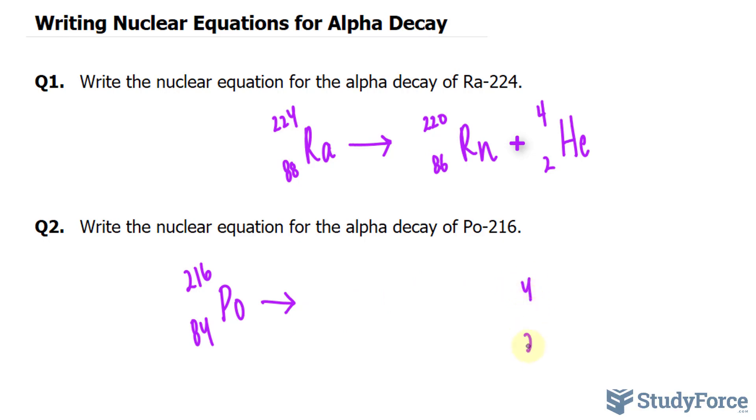This forms one alpha particle. Subtracting four from 216, we end up with 212. And subtracting two from 84, that's 82. The 82nd element on the periodic table happens to be bismuth.